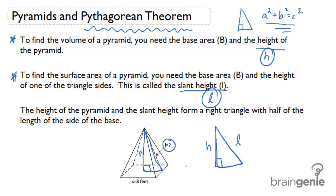The base of this right triangle is just half of one of the sides of the square base. And here we can use Pythagorean Theorem to find either h or l. That's really important to us.